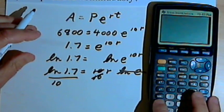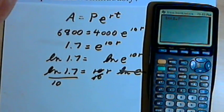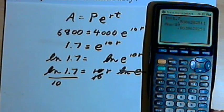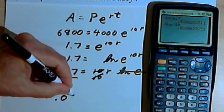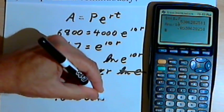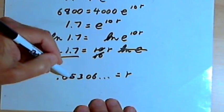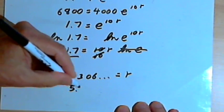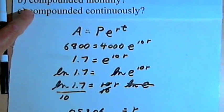Let's use the calculator to find that. I get the natural log of 1.7, and I want to divide that by 10. And what I get is 0.05306. For the rate, we'll round this and turn it into a percent. It's going to be 5.31%, a little bit lower than the previous rate because we're compounding it continuously.